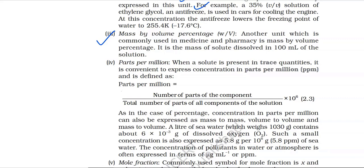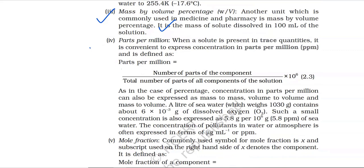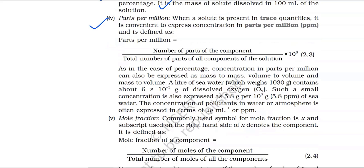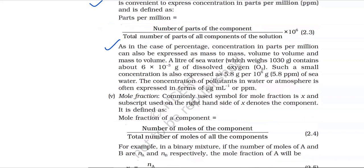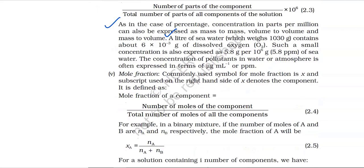Number 3: Mass by volume percentage. Another unit commonly used in medicine and pharmacy is mass by volume percentage. It is the mass of solute dissolved in 100 mL of the solution. Number 4: Parts per million. When a solute is present in trace quantities, it is convenient to express concentration in parts per million (ppm), defined as: ppm equals number of parts of the component divided by total number of parts of all components, multiplied by 10⁶. A litre of sea water weighing around 1030 g contains about 6×10⁻³ g of dissolved oxygen. This small concentration is also expressed as 5.8 ppm of sea water.